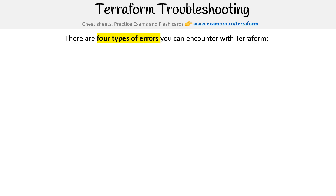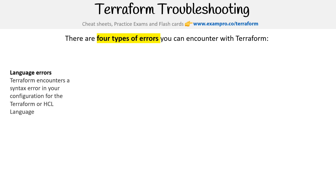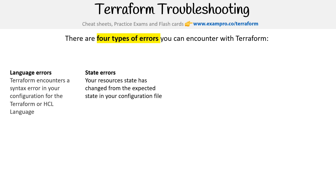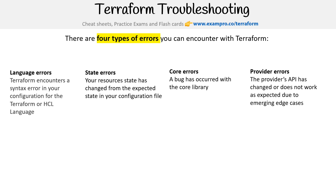Let's take a look at how we would actually go about troubleshooting Terraform. There are four types of errors you can encounter: the first is a language error, where Terraform encounters a syntax error in your configuration. Then there's a state error, where your resource state has changed from the expected state in your configuration file. There's also a core error, which is a bug in the core library, and provider errors, which occur due to emerging edge cases.